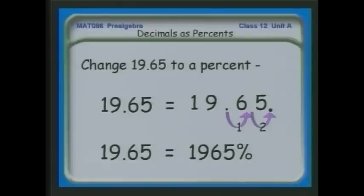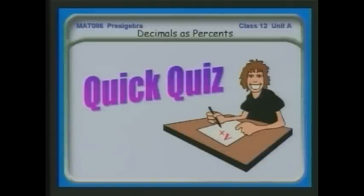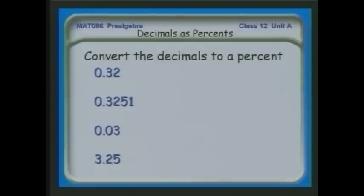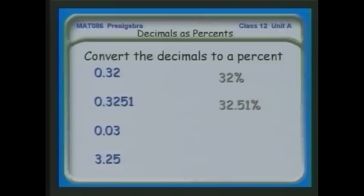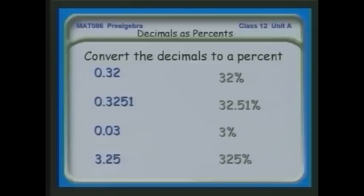To summarize: to go from a decimal to a percent, you move the decimal point two places to the right. To go from a percent to a decimal, you move the decimal point two places to the left. Quick quiz — change these from decimals to percents in your head: 0.32 is 32%; 0.3251 is 32.51%; 0.03 is 3%; and the decimal 3.25 is 325%.